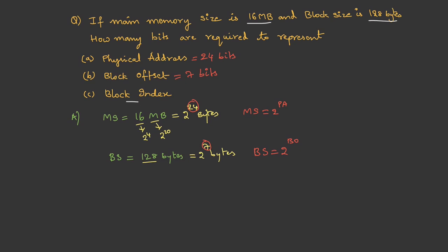Now coming to the block index, if you draw the diagram, in physical address, least significant bits are block offset, rest of the bits are block index. And we know that physical address is 24, block offset is 7. Block index is physical address bits minus block offset bits. That is 24 minus 7. Therefore, for block index, we need 17 bits.